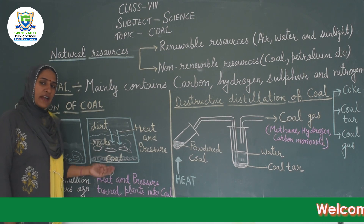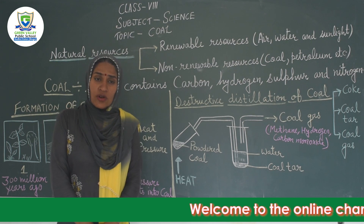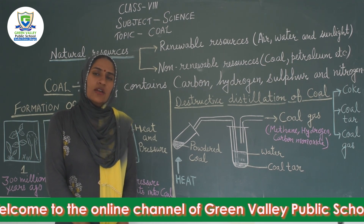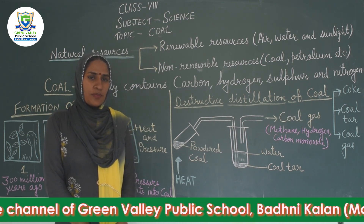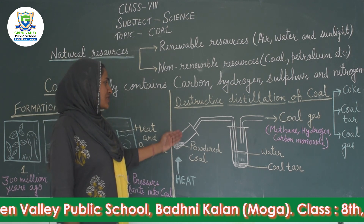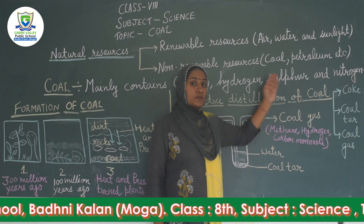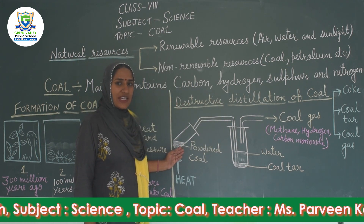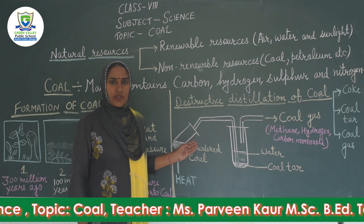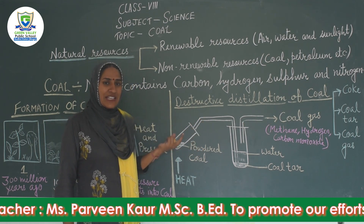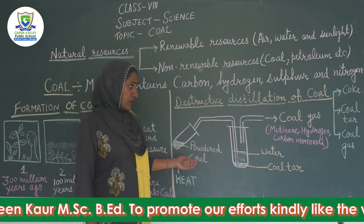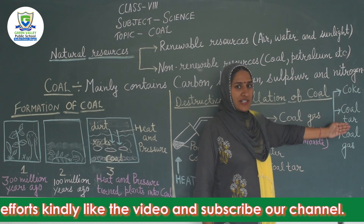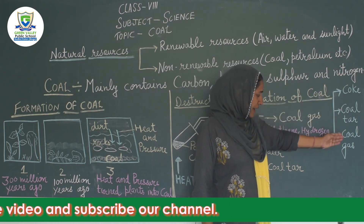Coal is a fossil fuel and it is the main energy source in India. Lots of heat and electricity is produced by coal in thermal power stations. Not only heat, there are many other uses of coal. We can obtain different products from coal by the process of destructive distillation of coal. Destructive distillation of coal means heating the coal in the absence of air to get different products. When destructive distillation of coal is done, we get three main products: coke, coal tar, and coal gas.